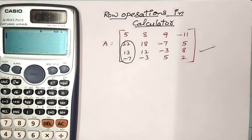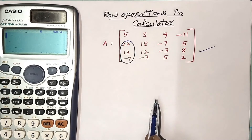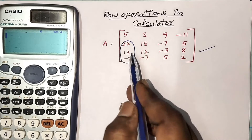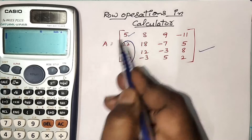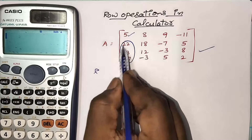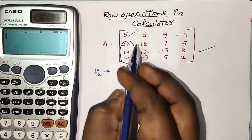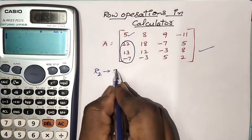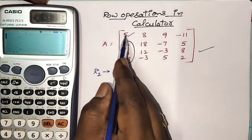Hi everyone, welcome back to our channel. In this video I would like to explain row operations in our scientific calculator. Here A is the given matrix. Suppose we have to make these three elements to zero by using the first element in the first row. I am writing some row operations to make these three elements to zero. The first one is R2 implies 5R2, since the first element in the first row is 5, we should multiply the second row with 5.